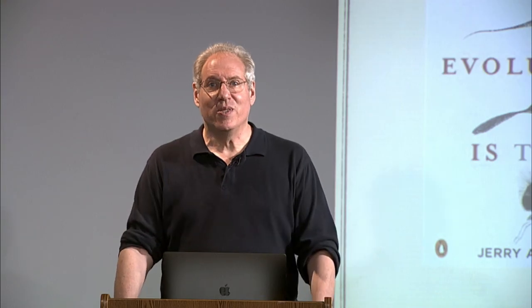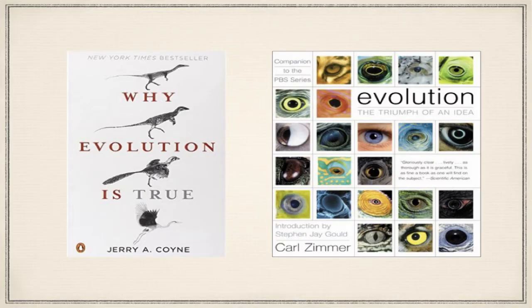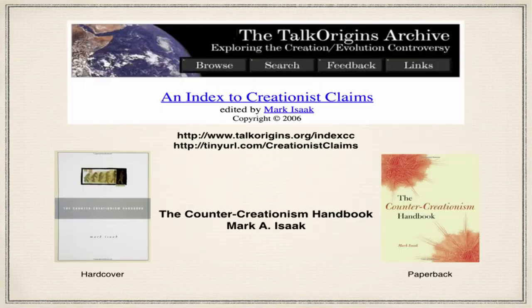A couple of really good books from this list: Why Evolution is True by Jerry Coyne; Evolution: The Triumph of an Idea by Carl Zimmer; The Greatest Show on Earth by Richard Dawkins; and Evolution: What the Fossils Say and Why It Matters by Donald Prothero. These are all very good, written for the average person, most of us being non-specialists. There's also a really good free online site: the Index to Creationist Claims — you can find it at tinyurl.com/creationistclaims — where you can find hundreds of creationist claims debunked.